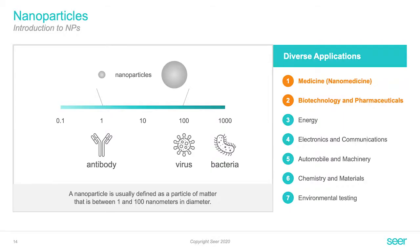Let's first start discussing nanoparticles. What are nanoparticles actually? Nanoparticles are very, very small structures, ranging from the size of major protein-protein complexes to small viruses. They are very small in comparison to cells, but they are still large in comparison to individual proteins.